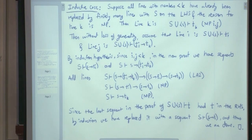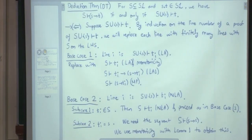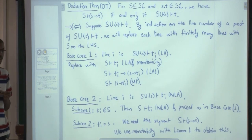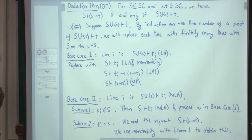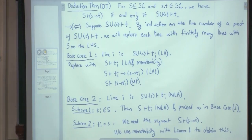Look at this deduction theorem DT. You can use it as a derived rule of inference. Modus ponens is the only original rule of inference. The deduction theorem can be used as a derived rule of inference and make proofs shorter. We are going to see an example of how to use DT as a derived rule of inference.